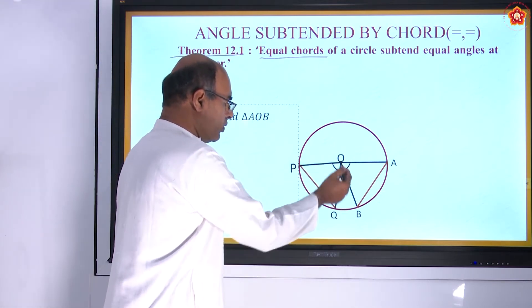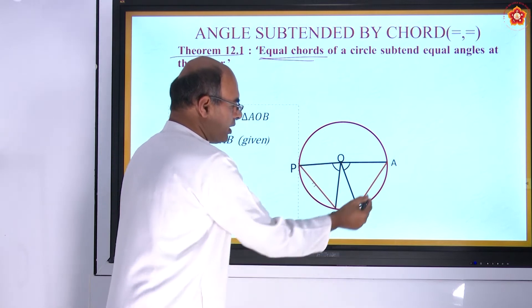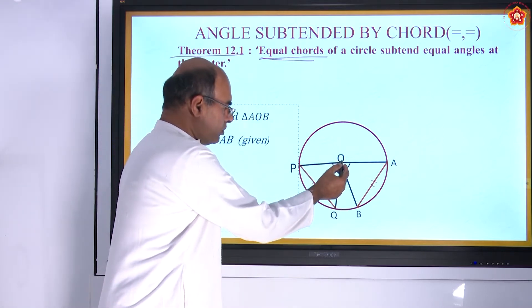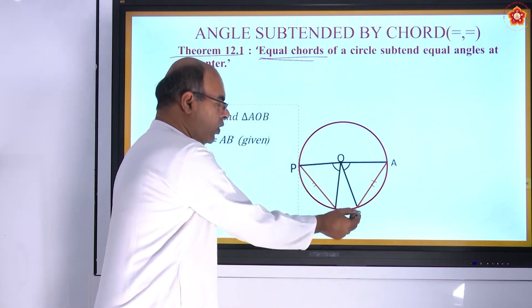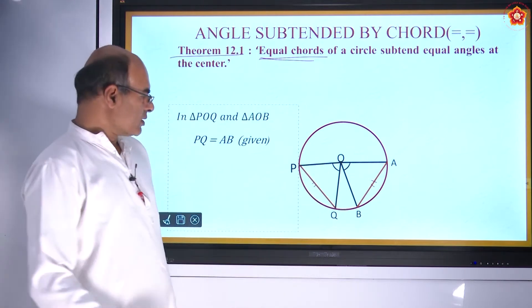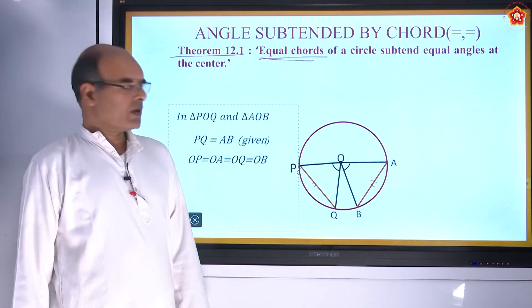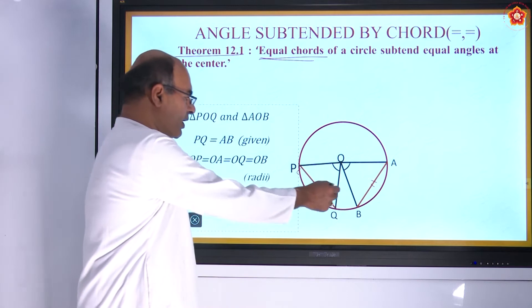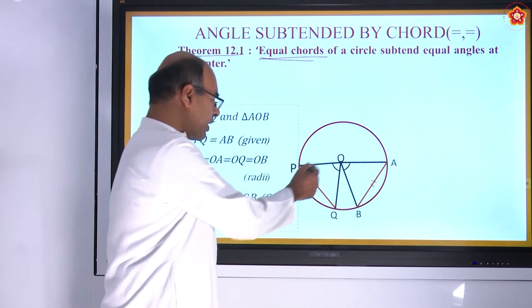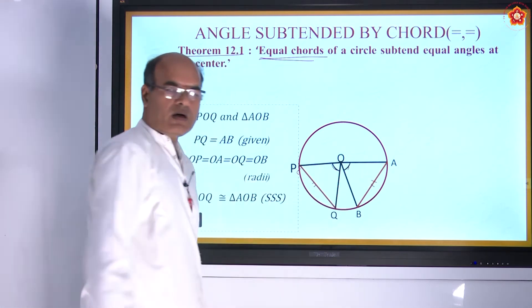Take triangles POQ and AOB. PQ equals AB as given. PO, OQ, OB, and OA are all radii of the same circle, therefore all are equal. So all three sides of one triangle equal the three sides of the other triangle. Therefore, by the SSS postulate, the triangles are congruent, and hence angle POQ equals angle AOB — the angles subtended by equal chords at the center are equal.